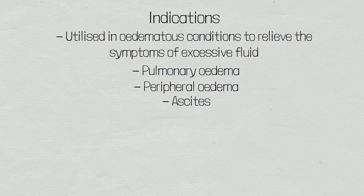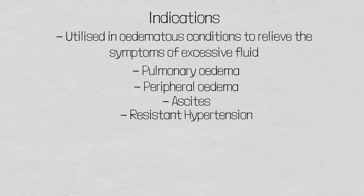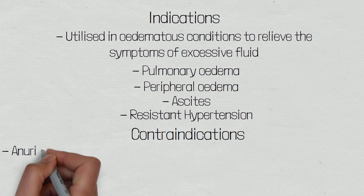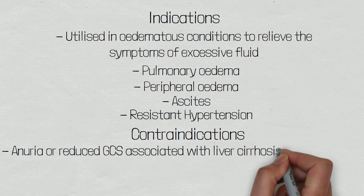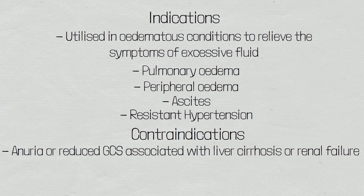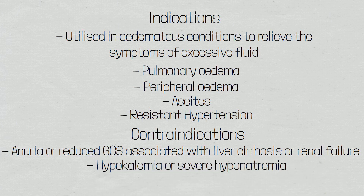Feruzamide can also be utilised in resistant hypertension to help reduce blood volume and total peripheral resistance, because feruzamide has vasodilatory effects. Although feruzamide may be used to treat edematous states that are as a result of liver cirrhosis and renal failure, it is contraindicated in patients who have anuria or reduced GCS associated with liver cirrhosis or renal failure. Other contraindications include patients with hypokalemia or severe hyponatremia, because feruzamide will cause an increased excretion of potassium and sodium, and feruzamide should not be used to treat pregnancy-induced hypertension.